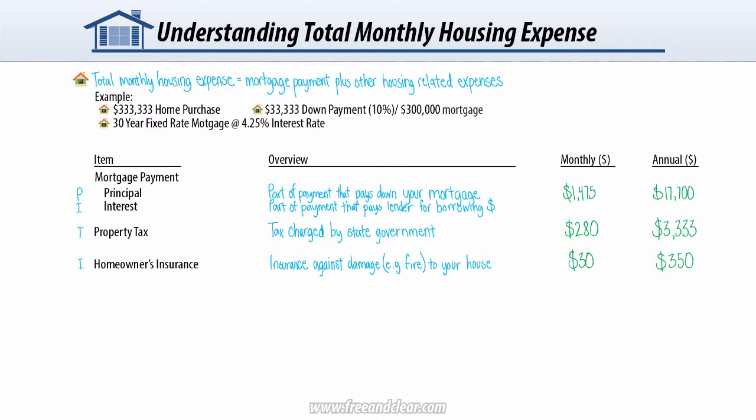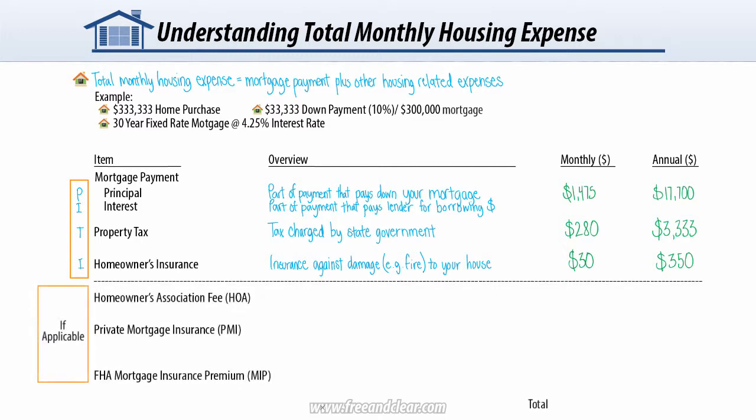Together, principal, interest, tax, and insurance are often referred to as PITI for short. These are the components of monthly housing expense that borrowers almost always have to pay. But there are additional housing expenses a borrower may be required to pay depending on your property type and mortgage program.